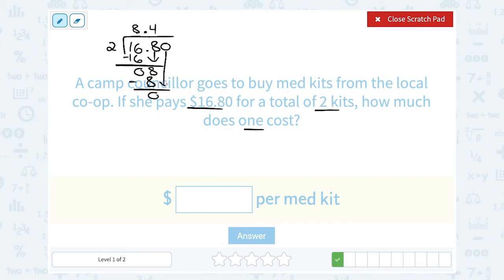And I'm going to bring down my other zero. Two does not go into zero. It goes in zero times. And two times zero is zero. I have no remainders, so my problem is done.